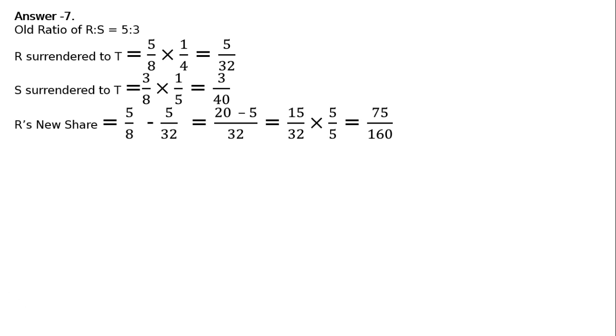R's new share will be old share minus surrendered share. His old share was 5 upon 8. He surrendered 5 upon 32. LCM 32. This is 32 upon 8, 4. 5 4s are 20. Minus 5.